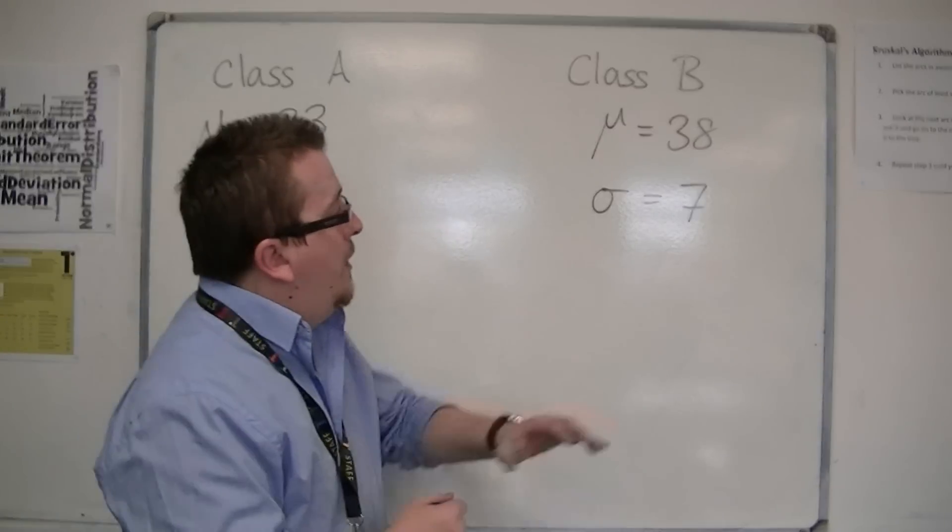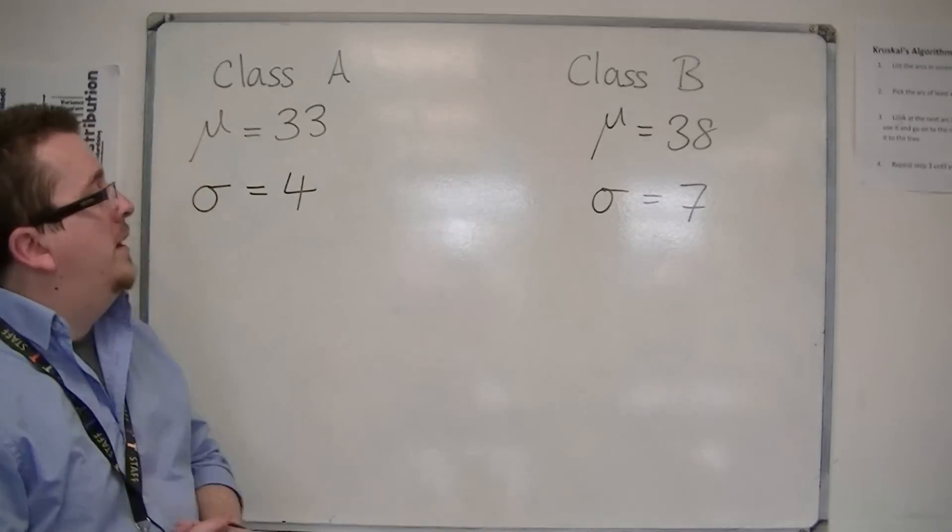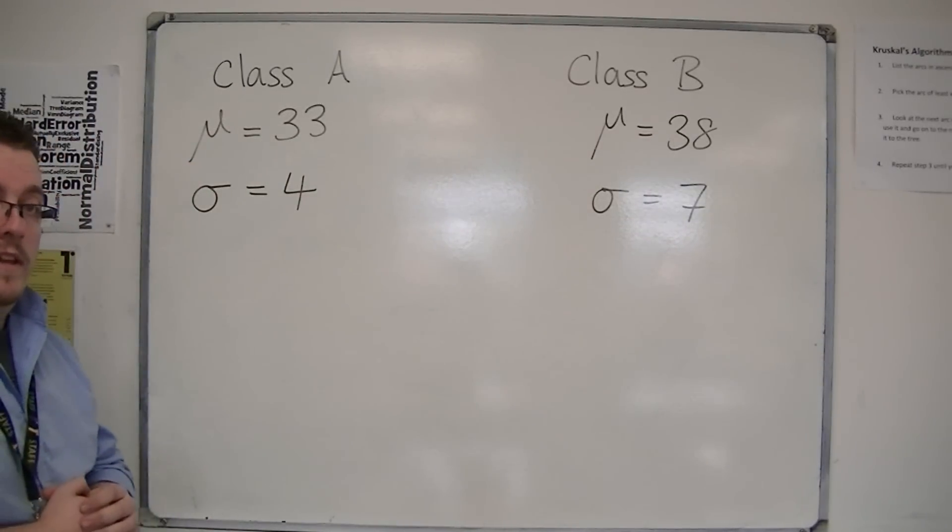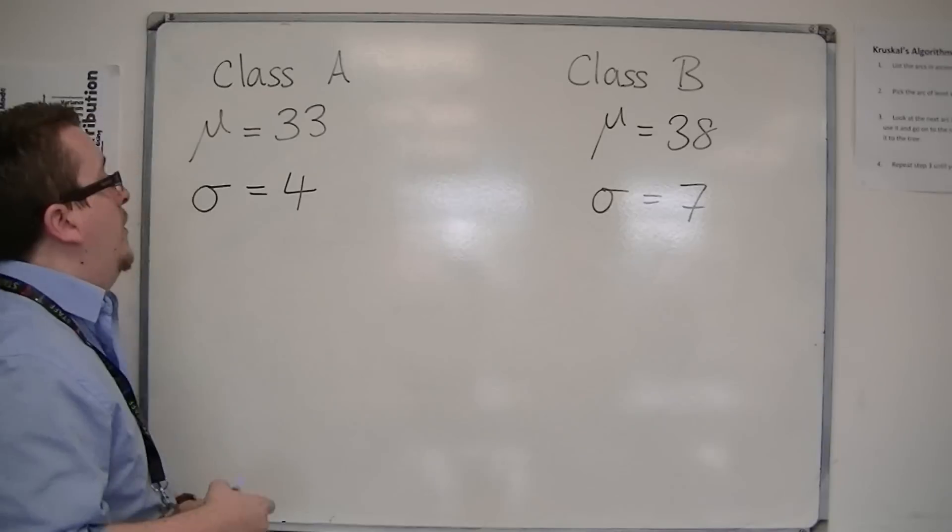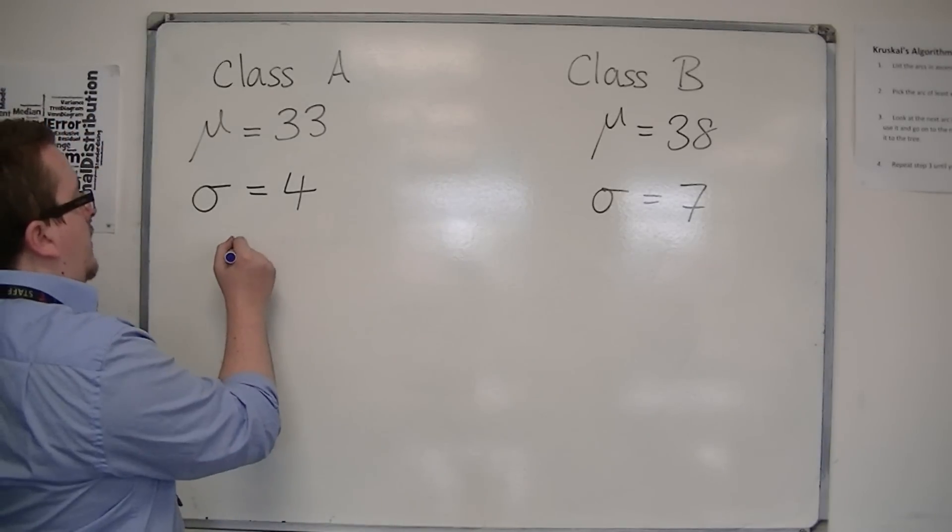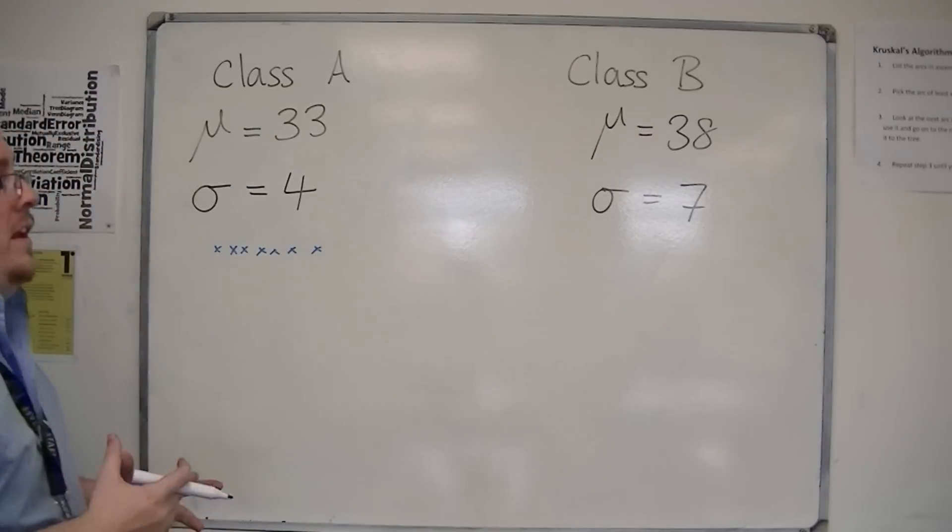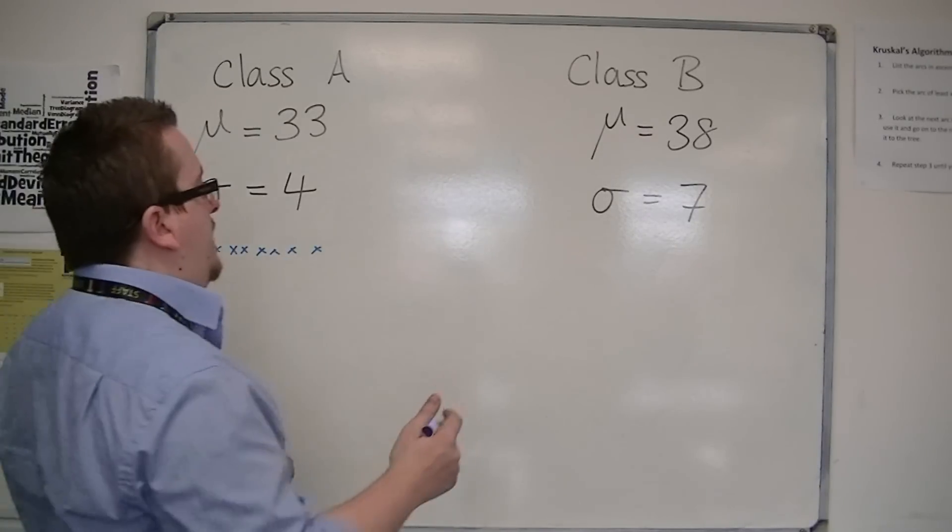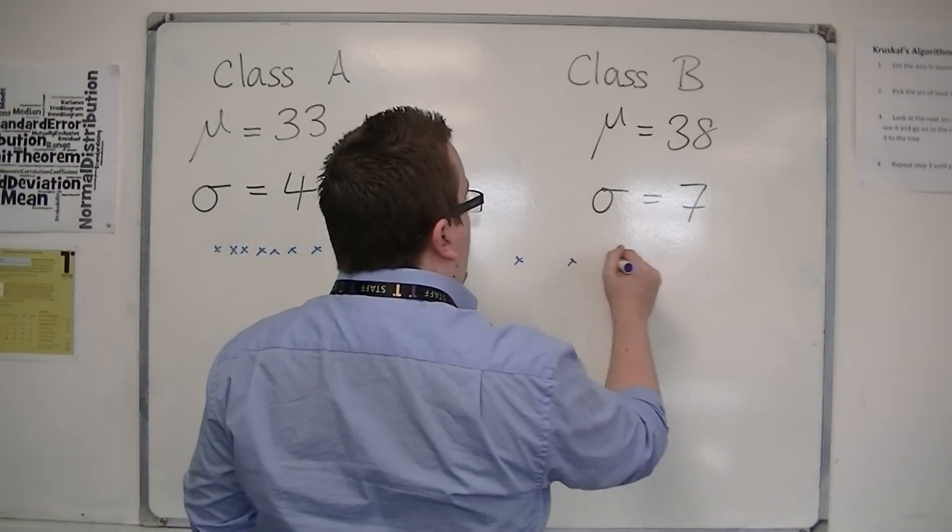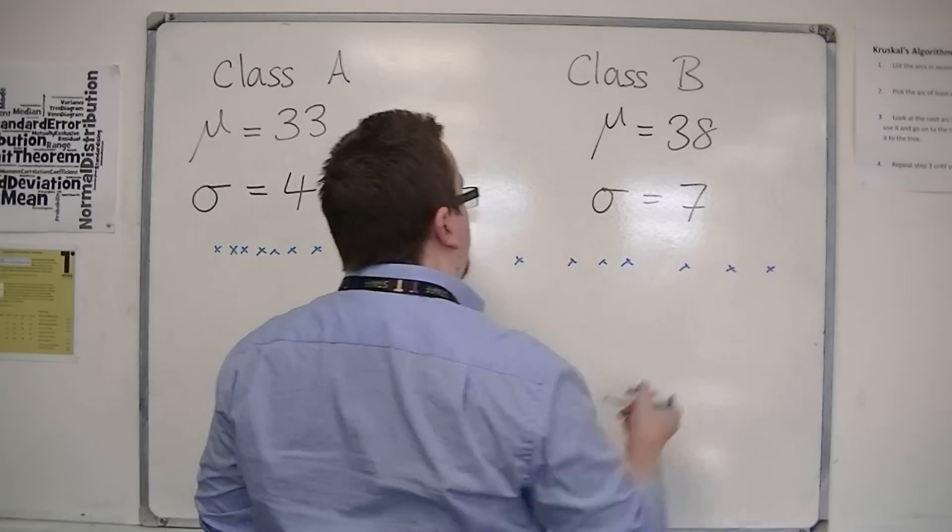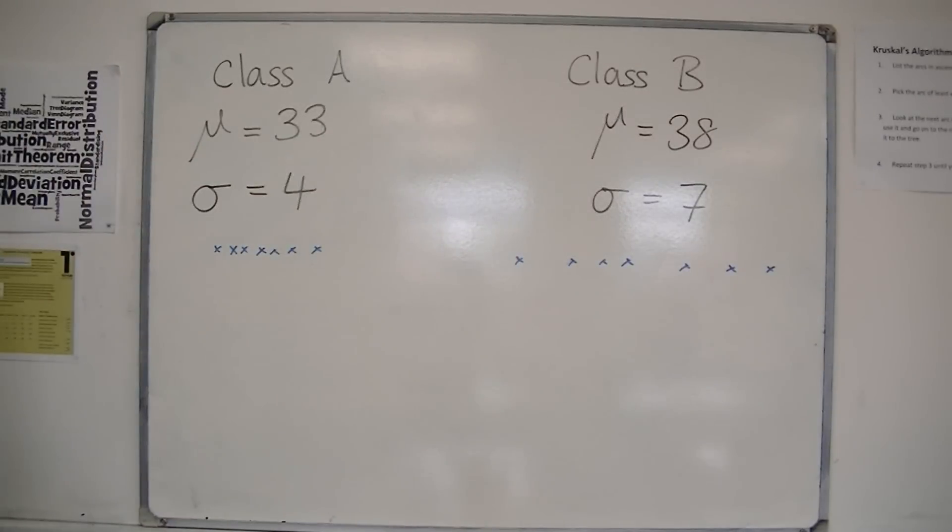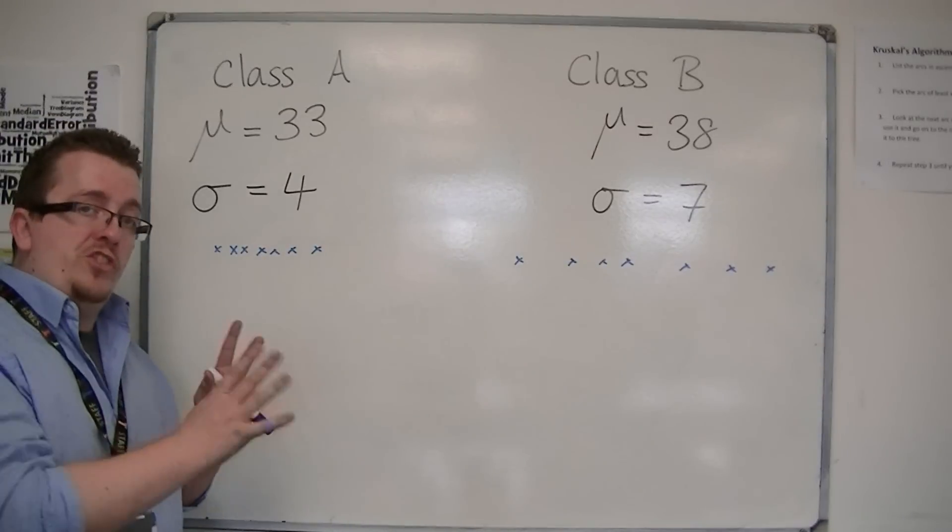However, you will also notice that the standard deviation for class B is larger than class A. What that means is that because class A's standard deviation is 4, with class B having a larger standard deviation of 7, their data is more spread out.